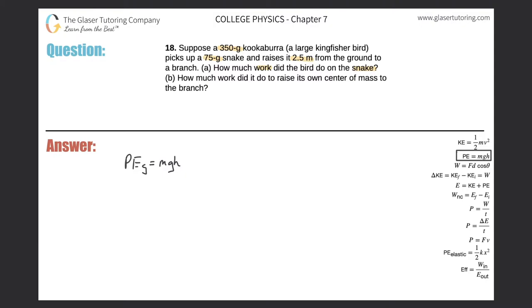All right, so since we're talking about the snake, we have to be thinking about all these variables in relation to the snake. Therefore, the potential energy change due to gravity of the snake should equal the mass of the snake multiplied by g multiplied by the height change of that snake.